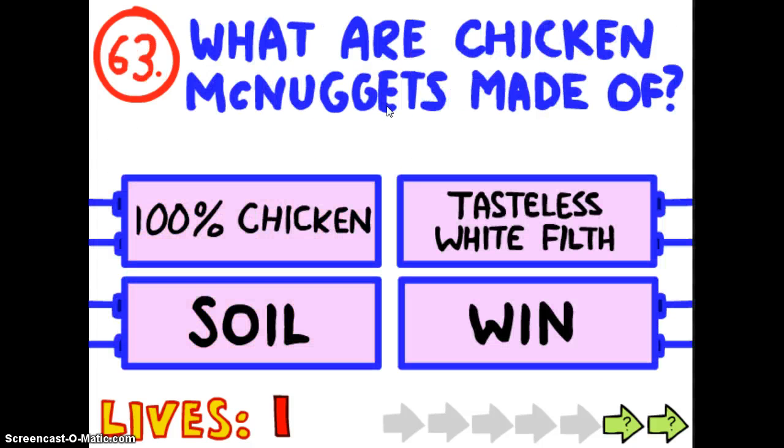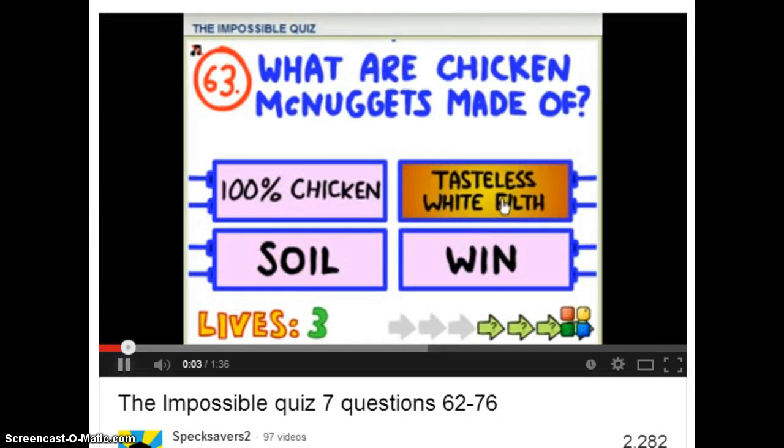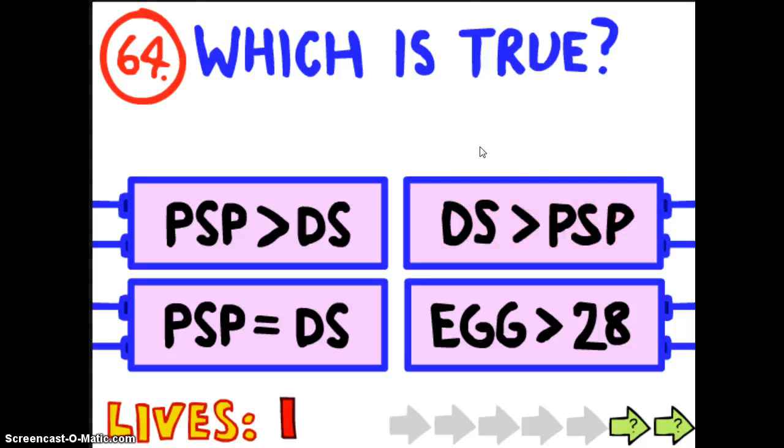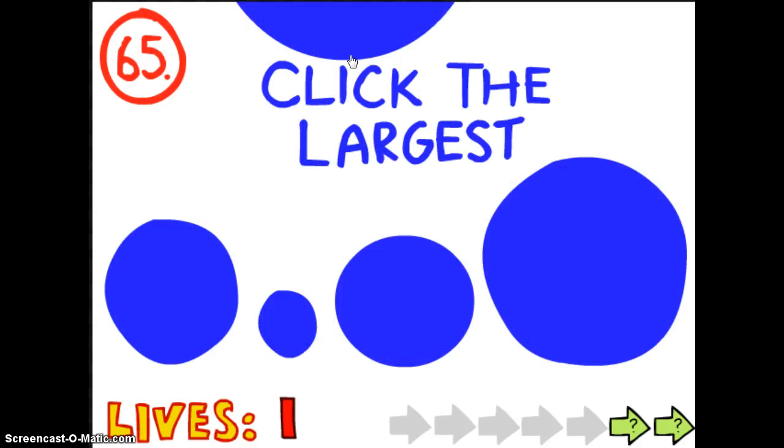What are chicken McNuggets made of? Let me... Let's see. Duh, it's so obvious. Which is true. PSP is bigger than DS? DS... Wait a second. This is obvious. Click the largest. For some reason, I have a feeling it's tricking me. The large T.